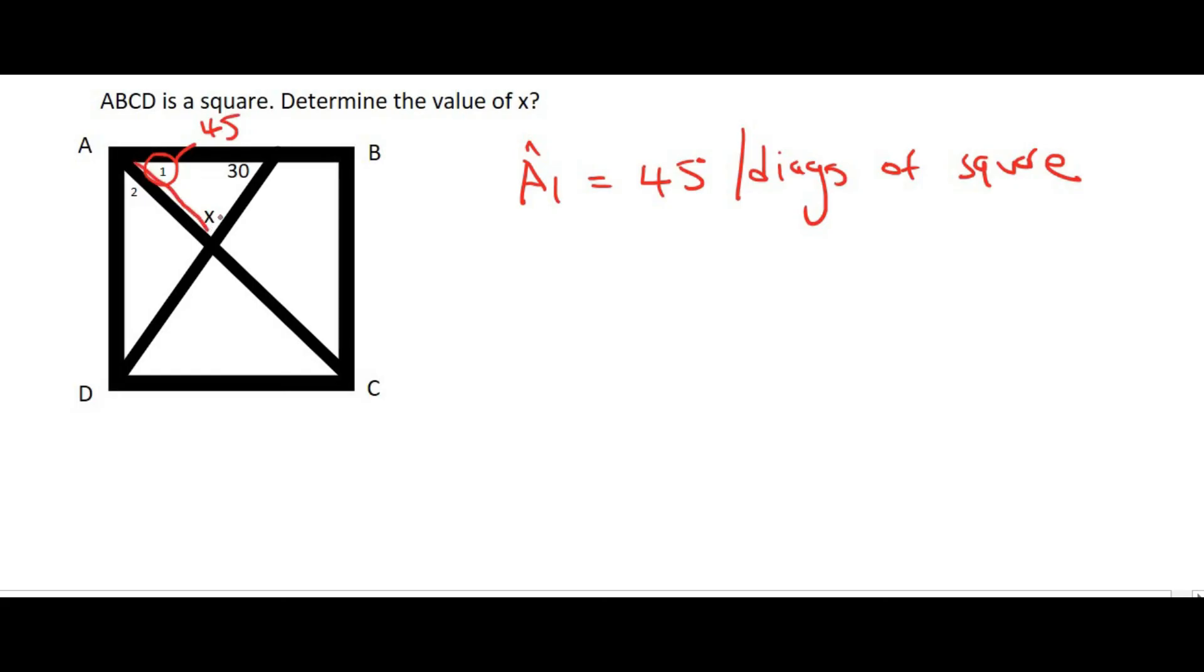We also know that this is a triangle, and the inside angles of a triangle always add up to 180 degrees. So, we can say that x is going to be equal to 180 minus 30 minus 45, and that's going to be sum of angles in triangle. And so, if you had to go work that out, you would get x is equal to 105 degrees.